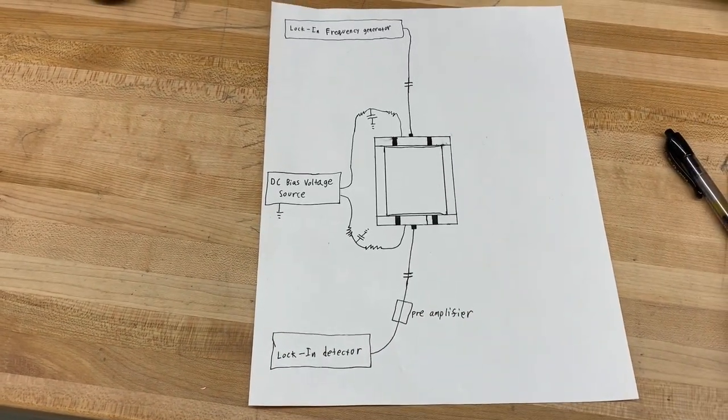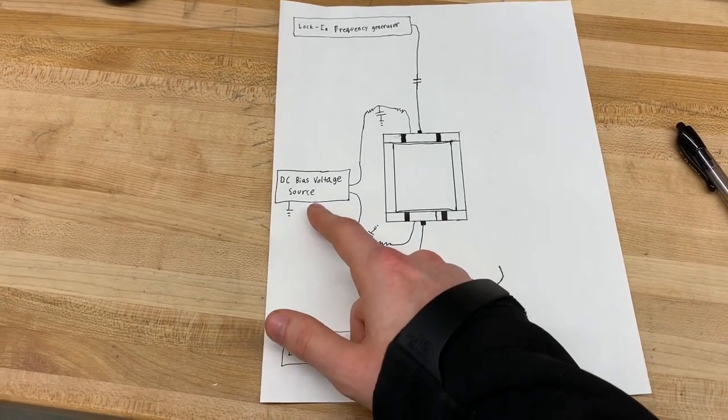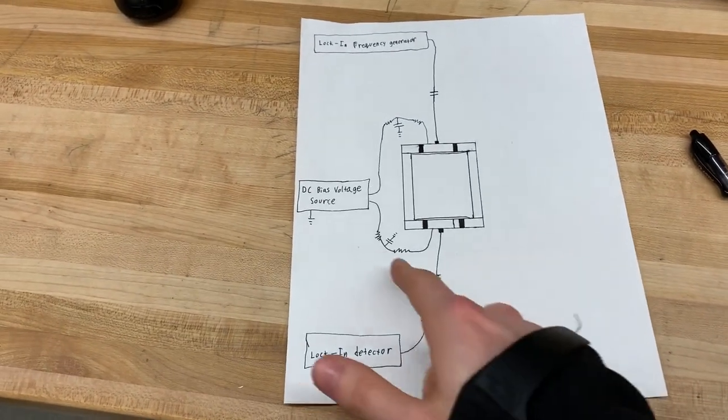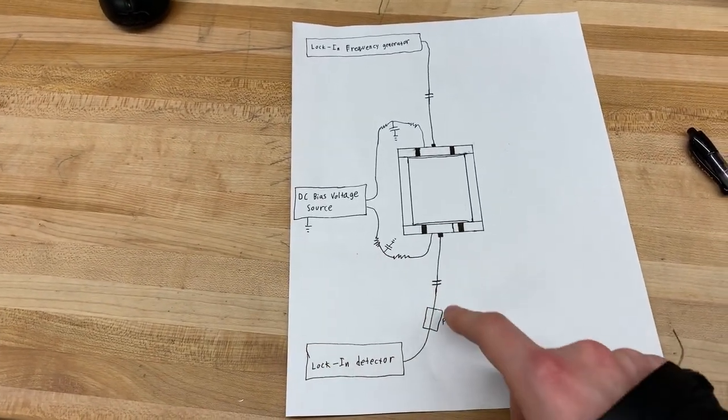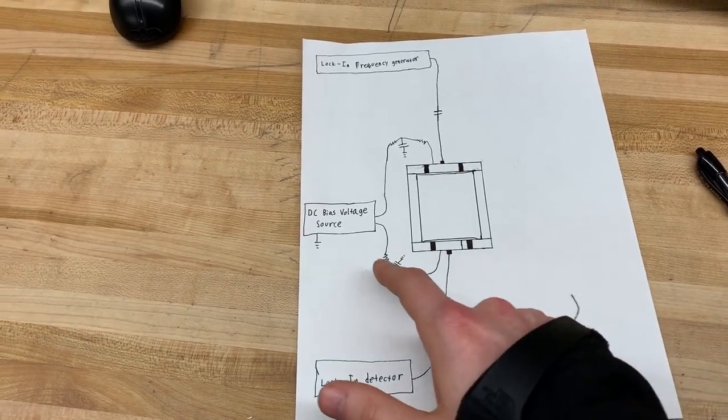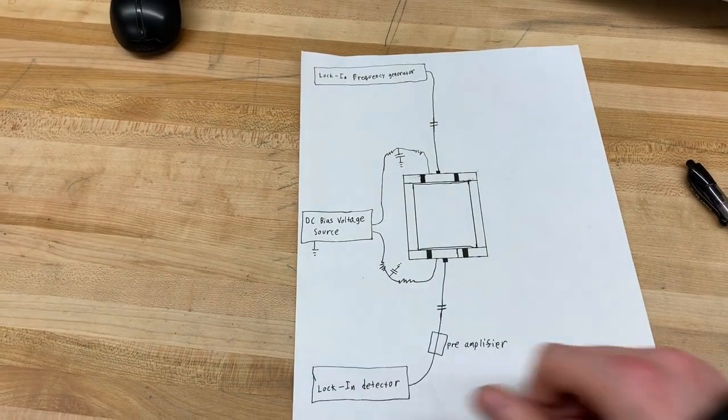Now the other problem we have to worry about is the high-frequency signal shorting straight through the DC source to the ground. We handle that by putting resistors here. These resistors not only serve to form part of the high-pass filter, but they also act as resistors which stop the AC from being able to short straight to ground.